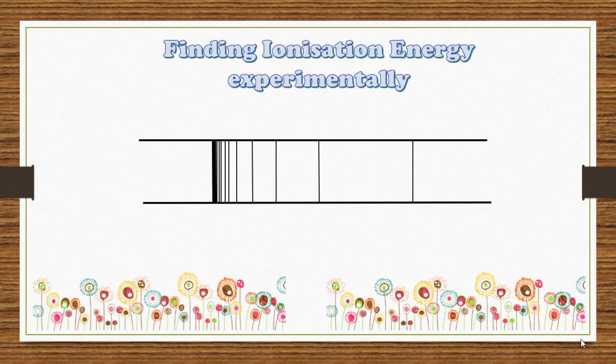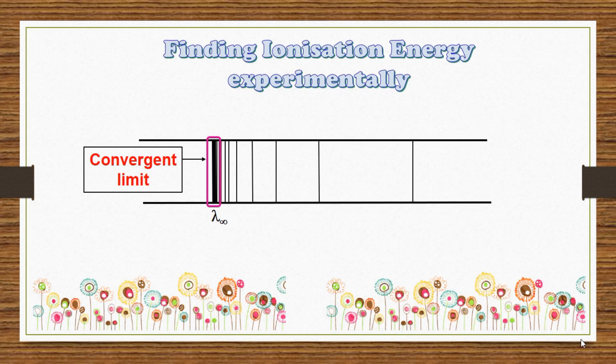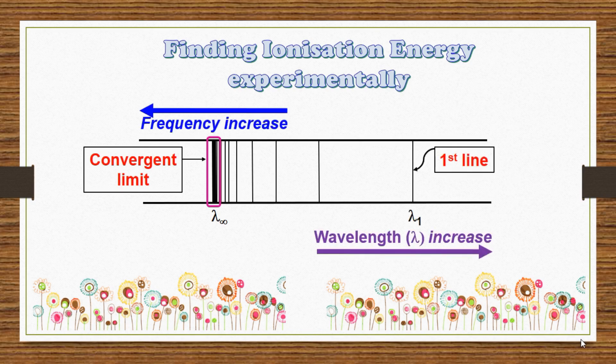Ionization energy is determined by detecting the wavelength of the convergence point. Eventually, the lines become so close to each other that they merge at a point called the convergent limit. At this point, the nucleus can no longer hold the electron. The electron has zero energy and is free to move. Therefore, the convergent limit is on the left-hand side, whereas the first line is on the right.